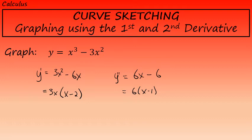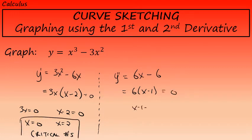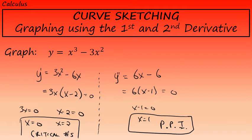The first and second derivative provide two important pieces of information when sketching the curve. The first derivative has zeros called critical numbers — these are possible extreme values. Setting each factor equal to zero, x equals 0 and x equals 2 are the critical numbers. Setting the second derivative equal to zero yields x equals 1, called a possible point of inflection, or PPI.